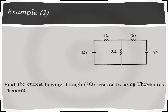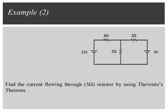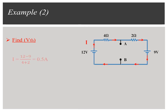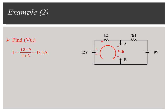Another example: Find the current flowing through the 3 Ohm resistor by using Thevenin's Theorem. To find V-Thevenin, remove the load resistor from the circuit and find the voltage between terminals A and B. We have a simple series circuit with opposite batteries, so there is only one path for the current to flow and it equals 0.5 Amperes according to Ohm's law. By applying Kirchhoff's voltage law to the left side loop, V-Thevenin is equal to 12 minus 4I. As a result, V-Thevenin is equal to 10 Volts.